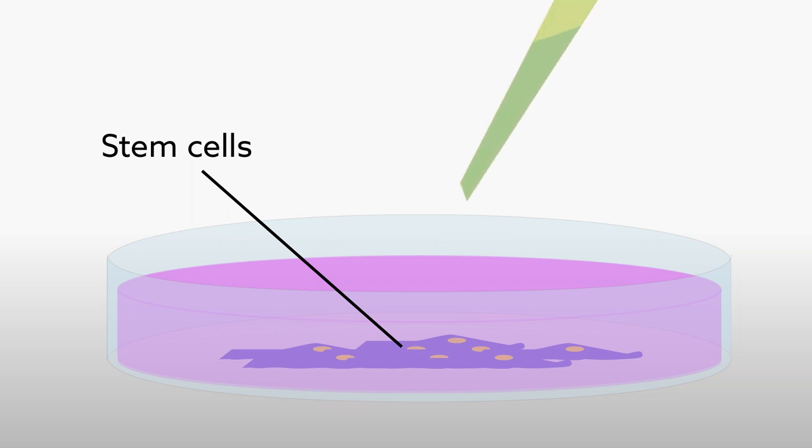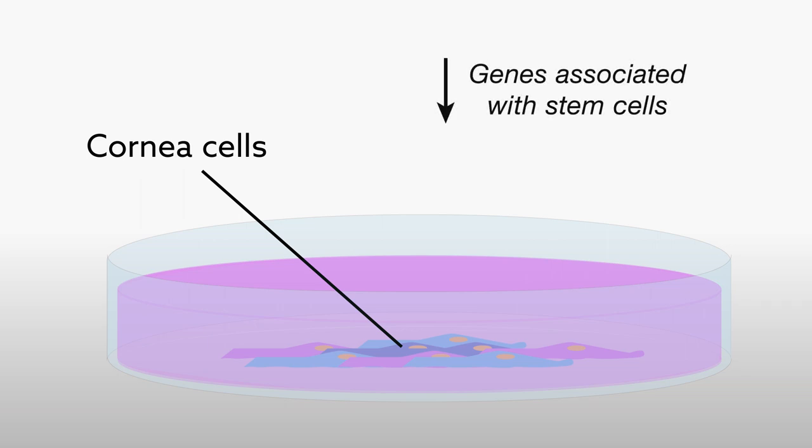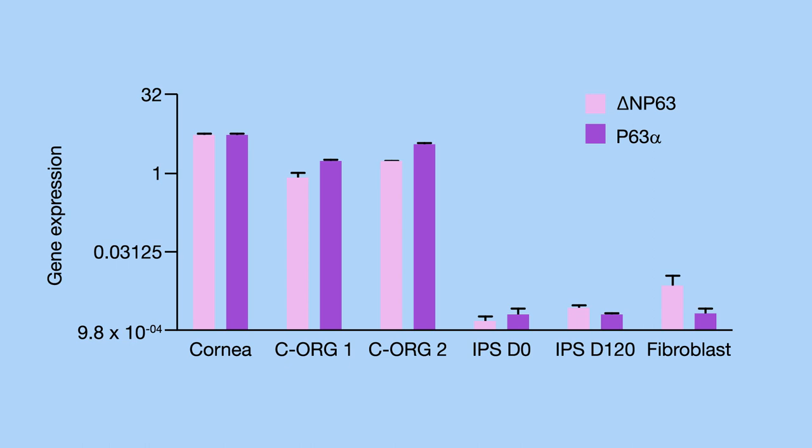By adding specific factors to the culture medium, the scientists were able to direct the cells into becoming cornea cells. Gene expression experiments confirmed that the cells had turned off genes normally associated with stem cells and had turned on the genes that mark cornea cell types.